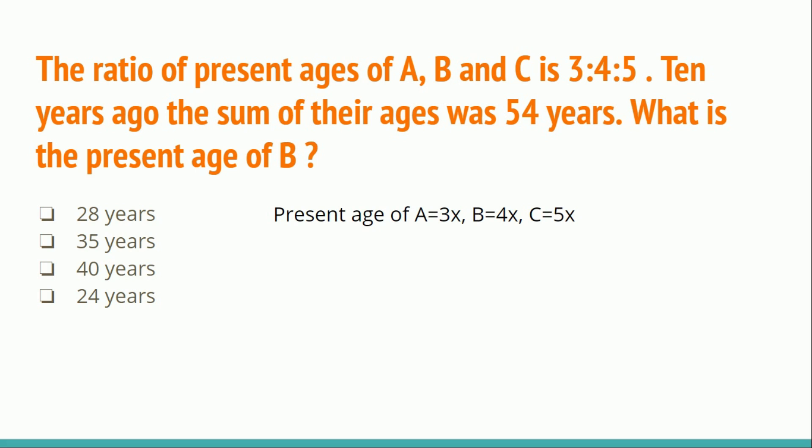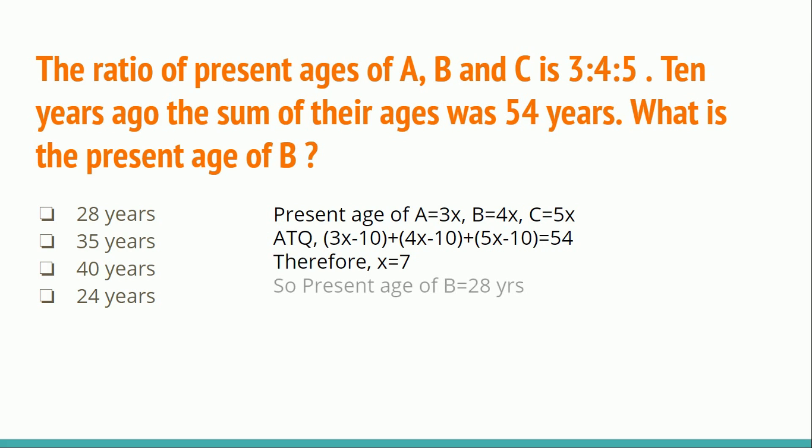Let the present ages of A, B, and C be 3x, 4x, and 5x respectively. Ten years ago: (3x − 10) + (4x − 10) + (5x − 10) = 54. Solving the equation gives x = 7. Therefore the present age of B = 4x = 4 × 7 = 28 years.